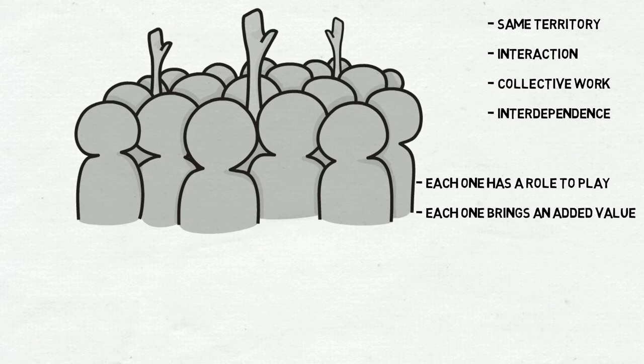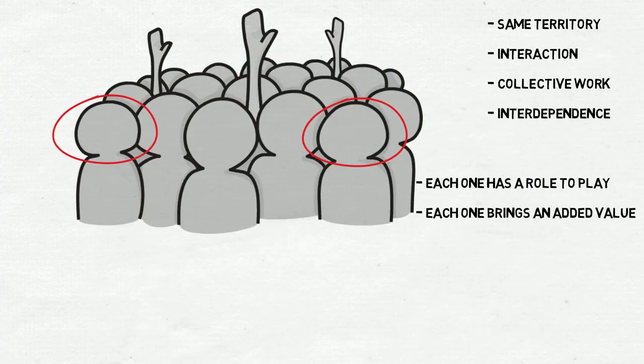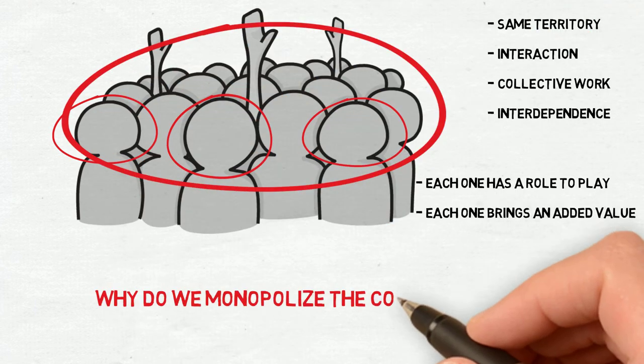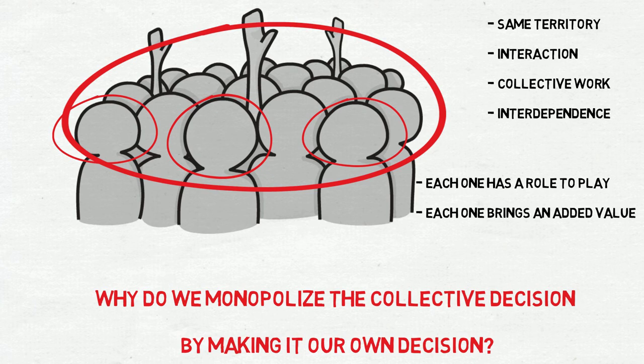So when we live in a group there are things that have to be done collectively or decided collectively because the results in any ways will affect each one, and that's why the responsibility must be shared since the beginning. Still, why do we monopolize the collective decision by making our own decision?